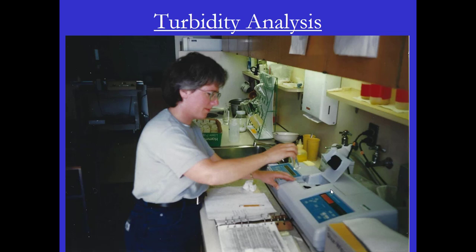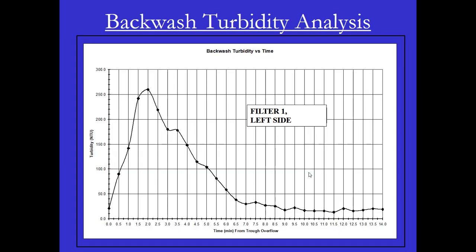After samples are collected, you want to take them to the laboratory, run them for turbidity, and then graph that data. You can see when the backwash started, after a minute or two the turbidity went up to about 250, which is good, and then it gradually came down. At about seven to seven-and-a-half minutes the turbidity is maybe 40, and at nine minutes maybe 20. From nine to about 14 minutes, the turbidity stays about 20. This is an indication that you're washing way too long.